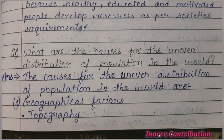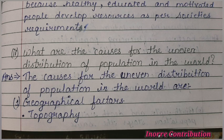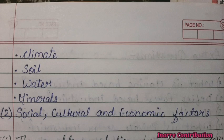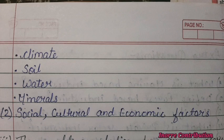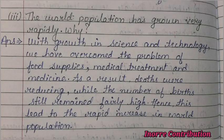Next question: what are the causes for the uneven distribution of population in the world? The causes are: first, geographical factors — that is topography, climate, soil, water, and minerals. Second, social, cultural and economic factors.